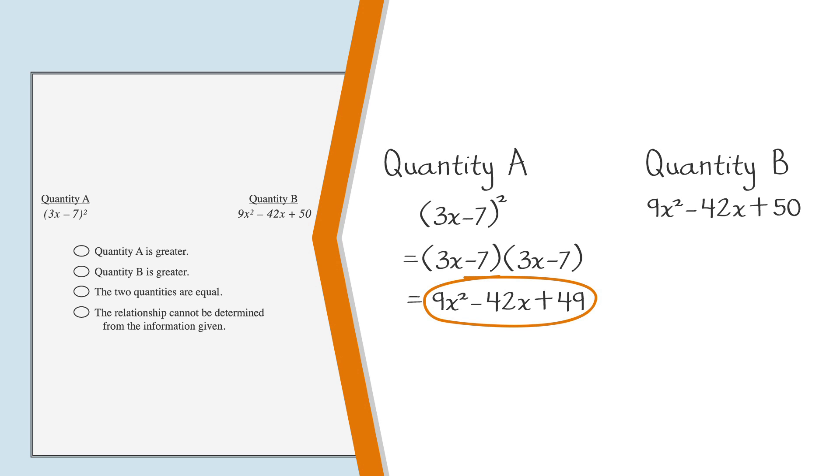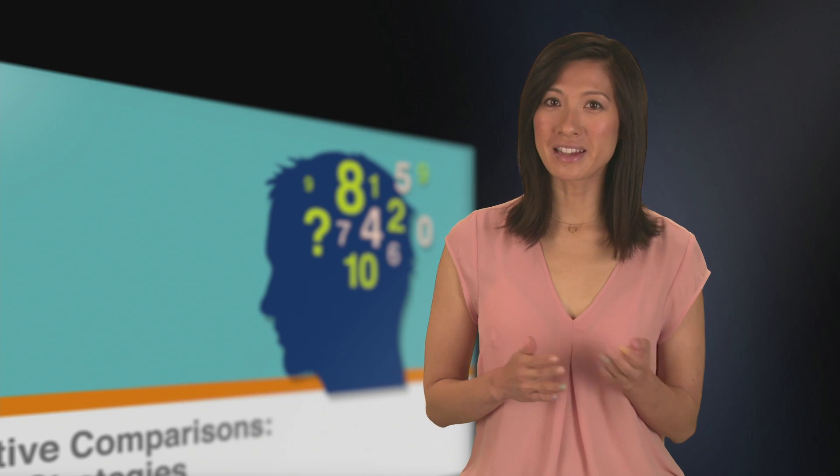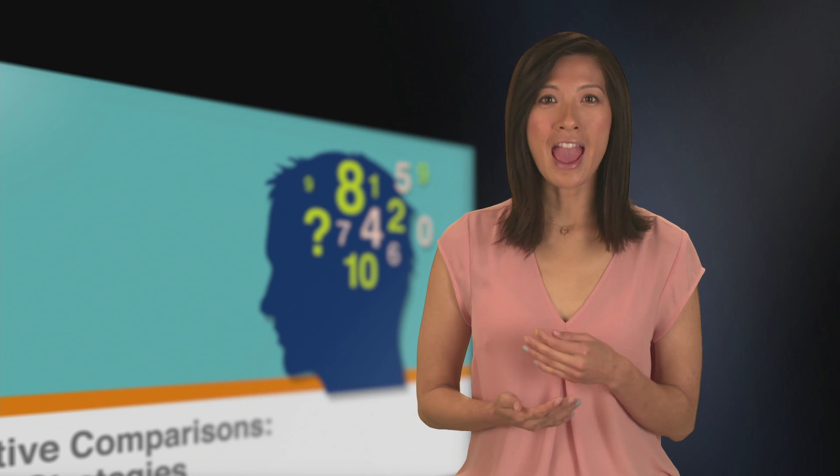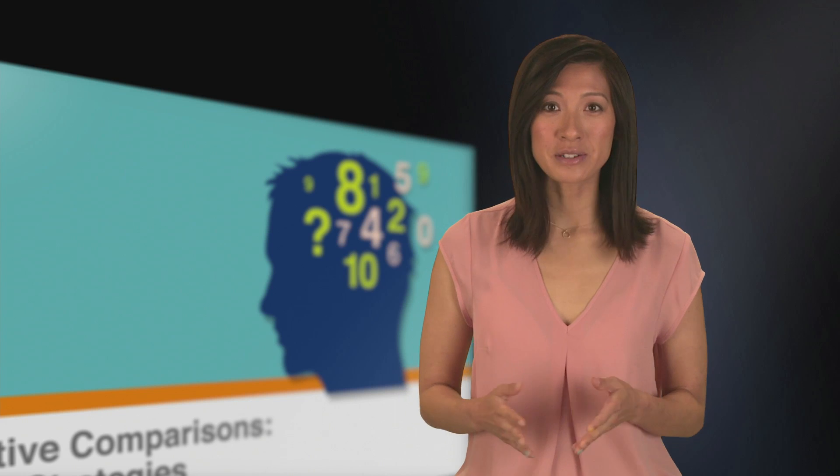Quantity A reads as 9x squared minus 42x plus 49. And quantity B reads as 9x squared minus 42x plus 50. By using the compare apples to apples strategy for that question, we can do a side-by-side comparison of quantities A and B so they look more like each other. This makes the question easier to solve.